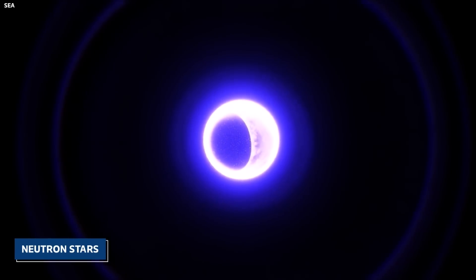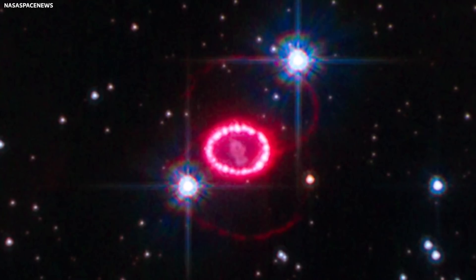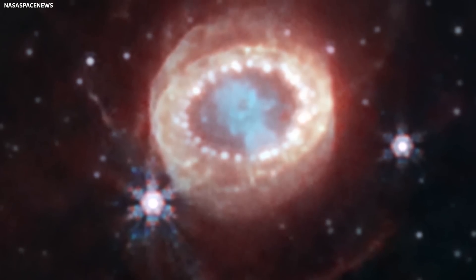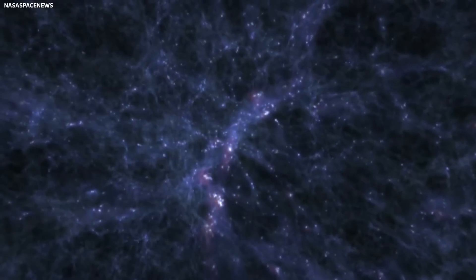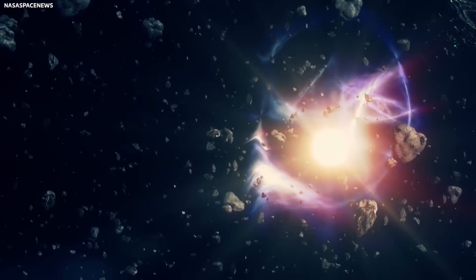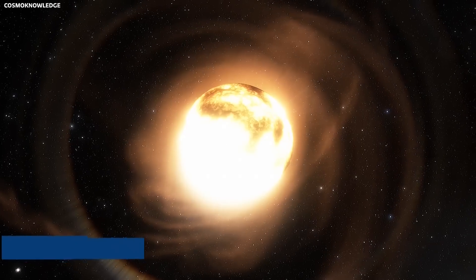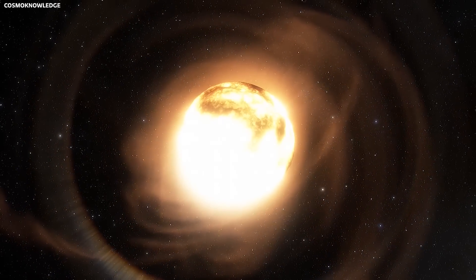While neutron stars typically form after a supernova explosion, the one in SN 1987A remains elusive, primarily due to its dense core. This explosion likely symbolizes the death of a blue supergiant star, one of the most massive and luminous stars in the universe.